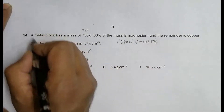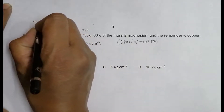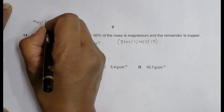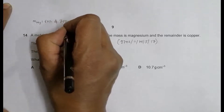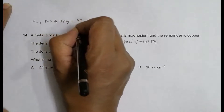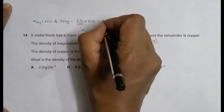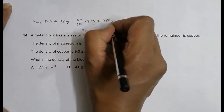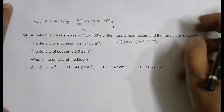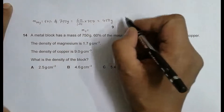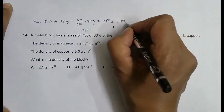The mass of magnesium is equal to 60% of 750 grams, that's equal to 60 divided by 100 multiplied by 750, and that becomes 450 grams. So the mass of magnesium is 450 grams.